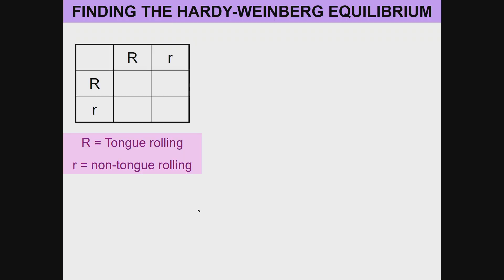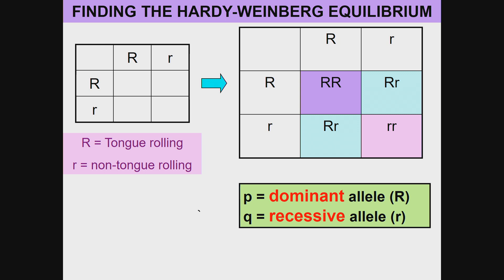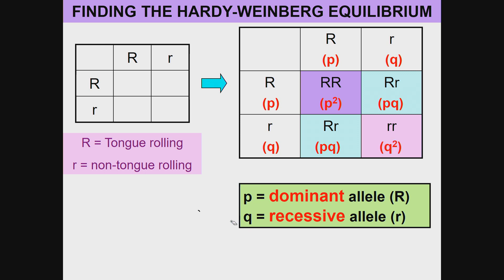To find the Hardy-Weinberg equilibrium, we go back to monohybrid crosses. Taking tongue rolling as capital R and non-tongue rolling as little r, we apply Hardy-Weinberg variables: p is the dominant allele and q is the recessive allele. Multiplying them out: p × p = p², p × q = pq, another pq, and q × q = q². This is how Hardy and Weinberg derived their equation: p² + 2pq + q² = 1.